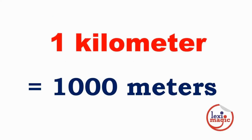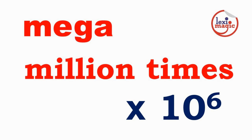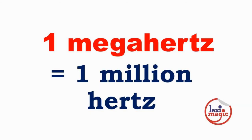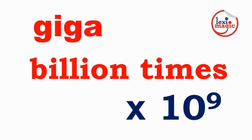The prefix mega indicates a million basic units, or 10 raised to the power of 6. 1 megahertz is equal to a million hertz. The prefix giga indicates a billion basic units, or 10 raised to the power of 9.